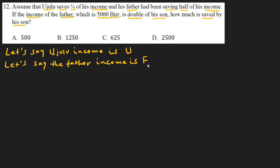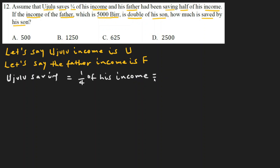Now, from the given information in the statement, we convert to a mathematical expression. Assume that Ujulu saves one-fourth of his income. So Ujulu's saving equals one-fourth of his income, which is one-over-four times U.